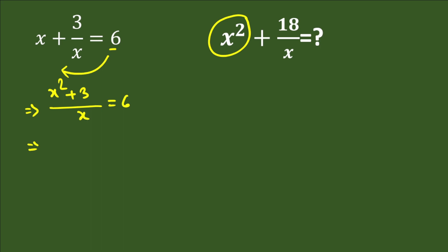Now cross multiplying, x squared plus 3 will be 6x. We'll take this 3 to the right hand side, so it will be negative 3. The value of x squared will be 6x minus 3.